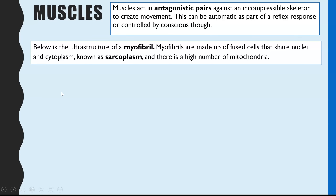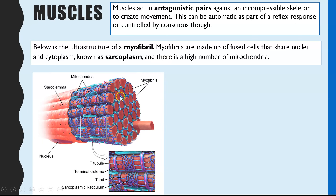What we're going to be looking at is the structure of skeletal muscle. The structure in particular that we focus on is what we call a myofibril, and that then branches into the sarcomere. We'll also be looking at the sarcoplasm. The myofibril is made up of fused cells and they share nuclei and cytoplasm — but we call the cytoplasm the sarcoplasm. There's also a very high number of mitochondria because ATP is essential for muscle contraction.